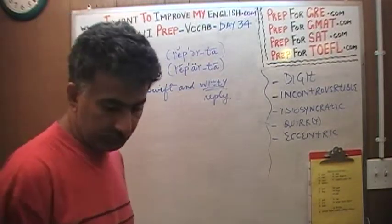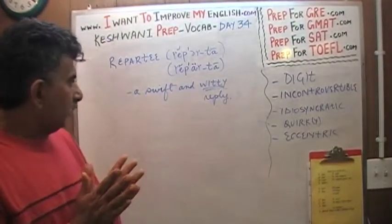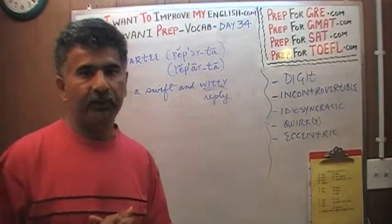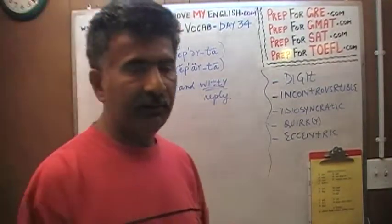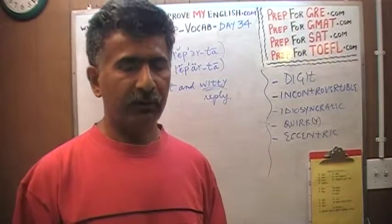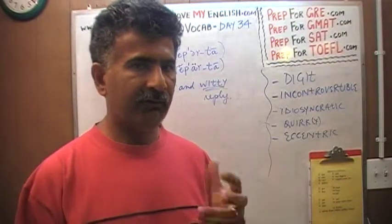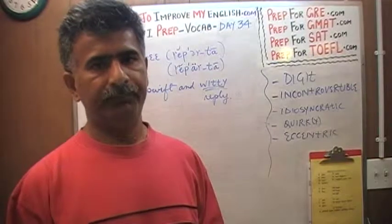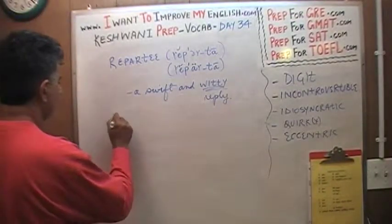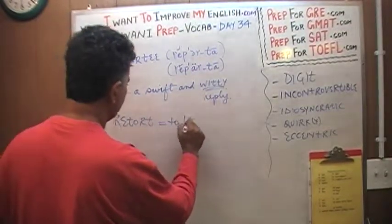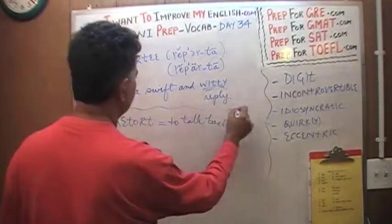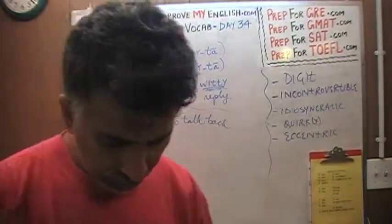Let me give you a quick example of a repartee. It just means a quick and witty reply. To talk back — and if it is not funny, if you are just talking back to somebody it is a retort, you are retorting. But if you talk back in a very witty and funny way, it is called a repartee. So repartee is related to retort, which means to talk back — but here it means to talk back in a funny, witty way.